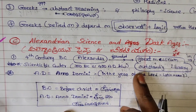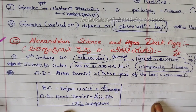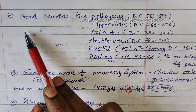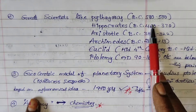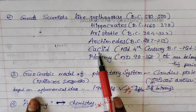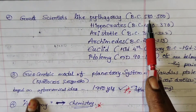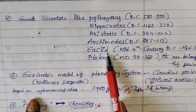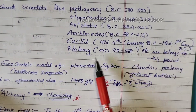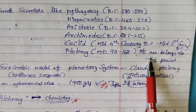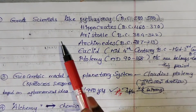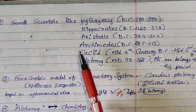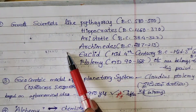The second point: Alexandrian science produced the greatest scientists. These include Pythagoras (BC 582–500), Hippocrates (BC 462–370), Aristotle (BC 384–322), Archimedes (BC 287–213), Euclid (mid-4th century BC to mid-3rd century BC), and Ptolemy (AD 92–168), all of whom belong to this period.